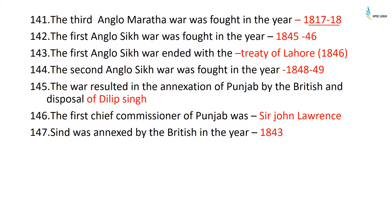The First Anglo-Sikh War was fought in 1845–1846 and ended with the Treaty of Lahore 1846. The Second Anglo-Sikh War was fought in 1848–1849 and resulted in the annexation of Punjab by the British and the disposal of Dalip Singh, who was exiled to England where he lived with his mother for the rest of his life. The first Chief Commissioner of Punjab was Sir John Lawrence. Sindh was annexed by the British in 1843.